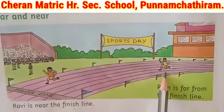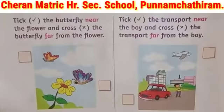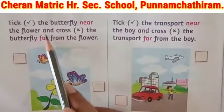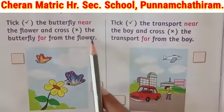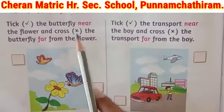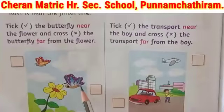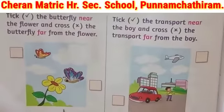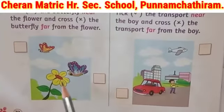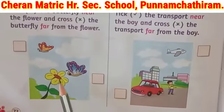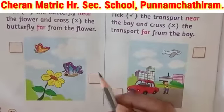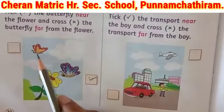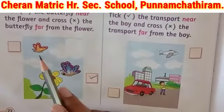Now we do the book activity. Tick the butterfly near the flower and cross the butterfly far from the flower. Look at the pictures — this butterfly is near the flower, so we have to tick this.